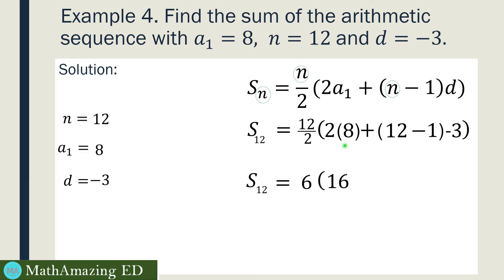Then, 2 times 8 is 16. 12 minus 1 is 11. 11 multiplied to negative 3. 11 times negative 3 is negative 33. And then 16 plus negative 33 is just negative 17. Last step, multiply 6 to negative 17, and that is just negative 102.